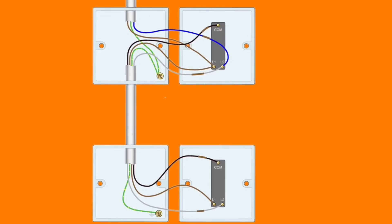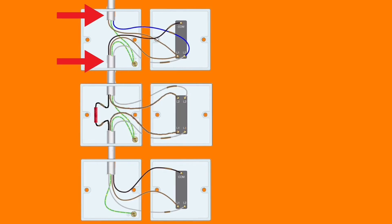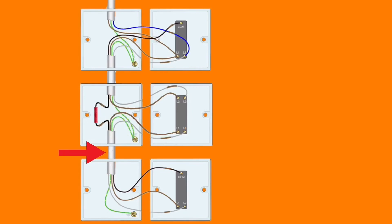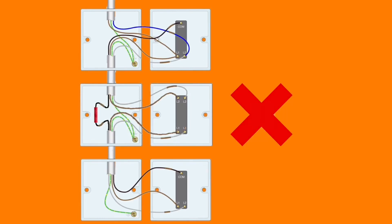In the final part of this presentation we're going to look at how we could introduce a third switch, making the switching arrangement two-way and intermediate. For two-way and intermediate switching, we've added a switch in the center. The top switch is still fed with a twin and CPC cable and still has a three-core and CPC going on to the next switch position, and is still a two-way switch. The three-core feeds into the second switch position, and we've added another three-core cable from that position down to the new switch position at the bottom, replacing the center switch with an intermediate switch.